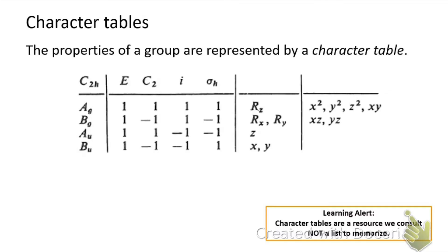Here is the character table for C2h, the point group of the trans-dichloroethylene molecule we were looking at previously. Character tables are available as a printed resource and also as a PDF on Moodle. It should be noted that character tables are not the kind of thing we commit to memory — instead they're a resource that we consult, kind of like the periodic table itself.